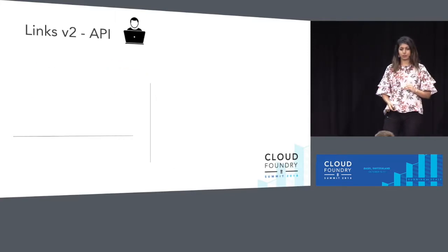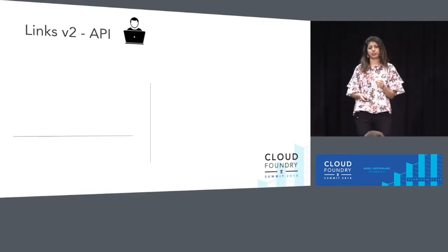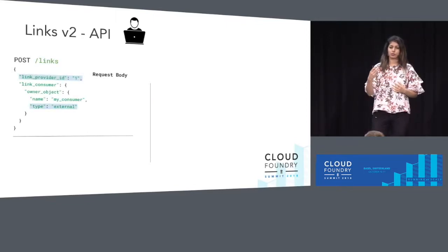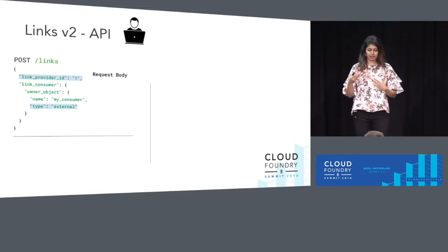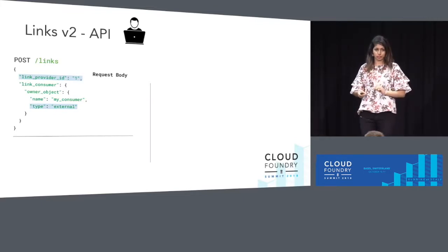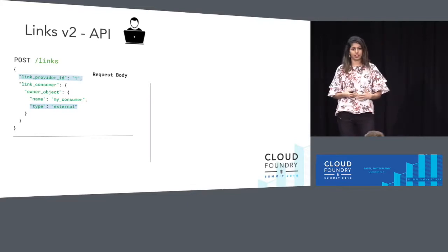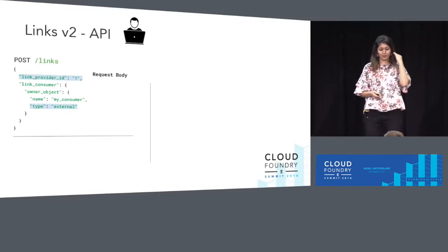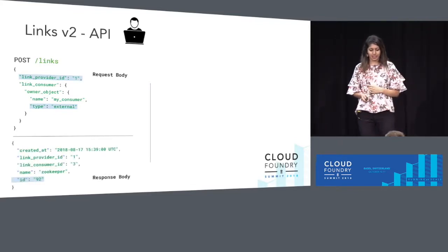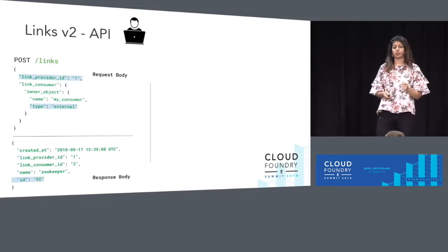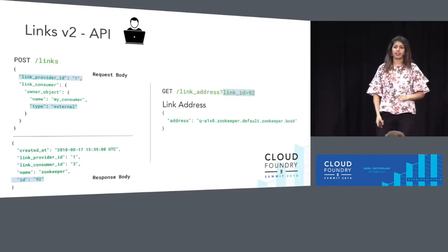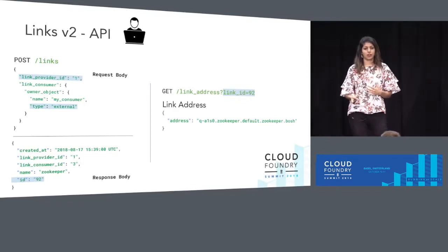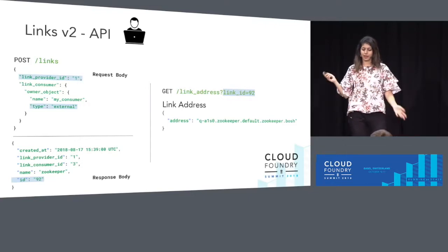We have also created the ability for you to create a link as a third-party entity. You specify your provider and set your type as external. When Bosch resolves this link, it will find the provider with type external and be able to resolve it, so it's very important to set your type as external. The response gives you back the generated link ID, which you can use to query and get the link address. This becomes super useful for service brokers when they're trying to resolve a link's networking information to generate the Bosch DNS address for service instances.